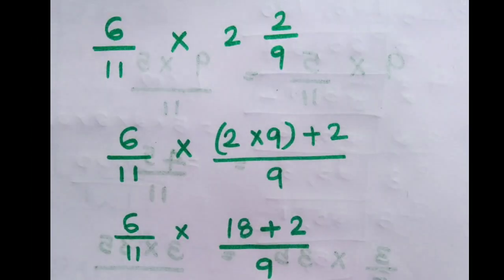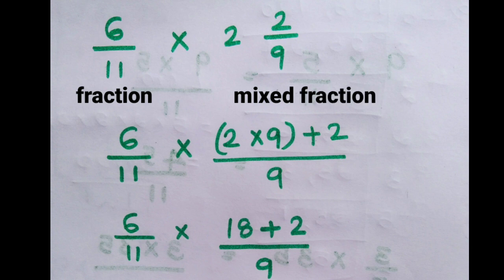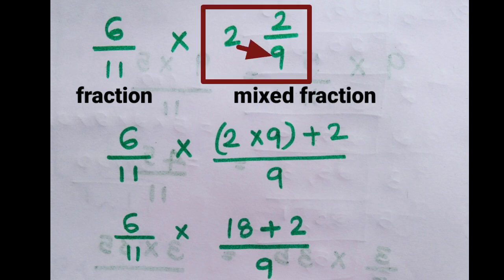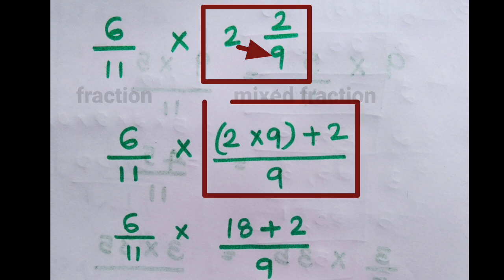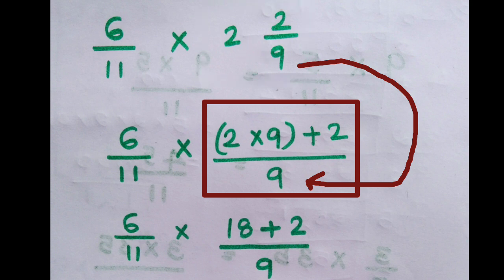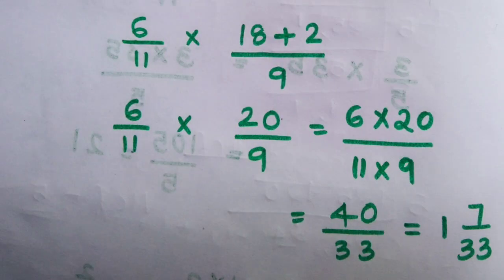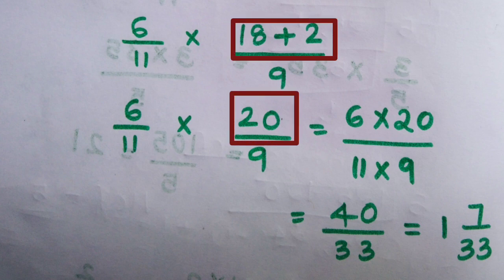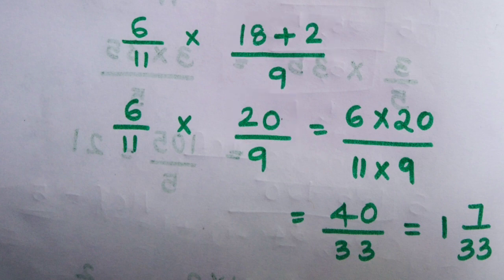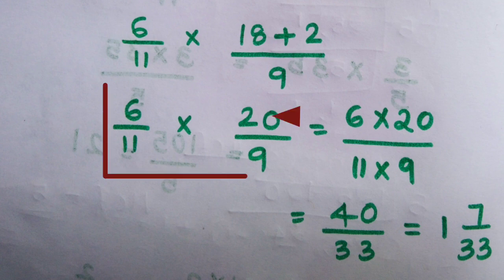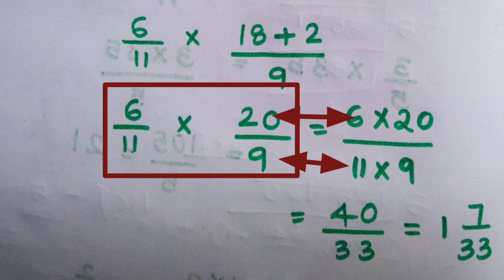Next one is multiplying a fraction and a mixed fraction: 6/11 multiplied by 2 and 2/9. Here 6/11 is a fraction and 2 2/9 is a mixed fraction. Convert the mixed fraction into an improper fraction: 2 into 9 plus 2, divided by the same denominator 9. That gives 18 plus 2, which is 20, divided by 9. Then multiply the fractions 6/11 and 20/9, multiplying the numerator and denominator.